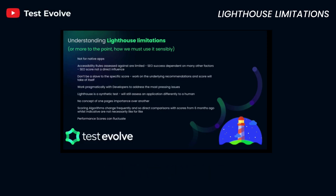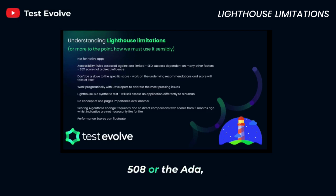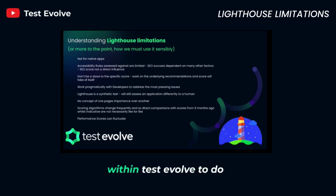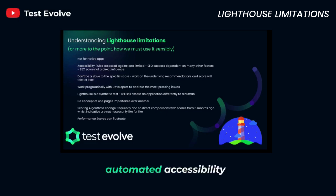This is predominantly why we also have the ability to use axe, axe-core, as a source within Test Evolve to do much, much deeper dive automated accessibility testing.